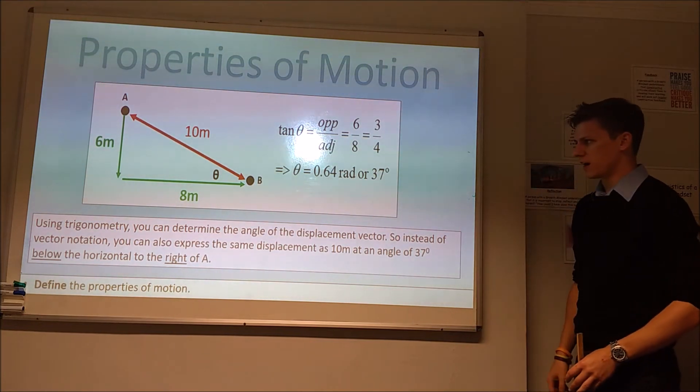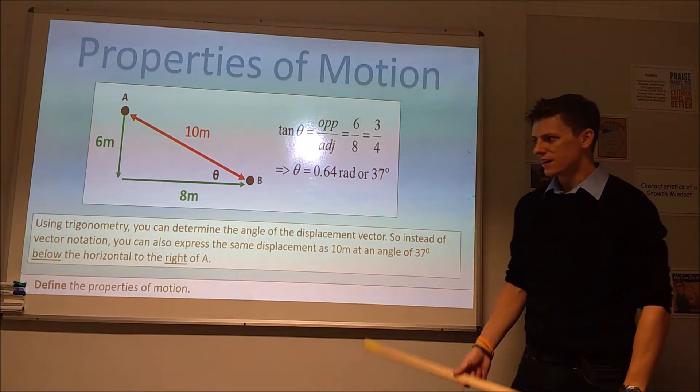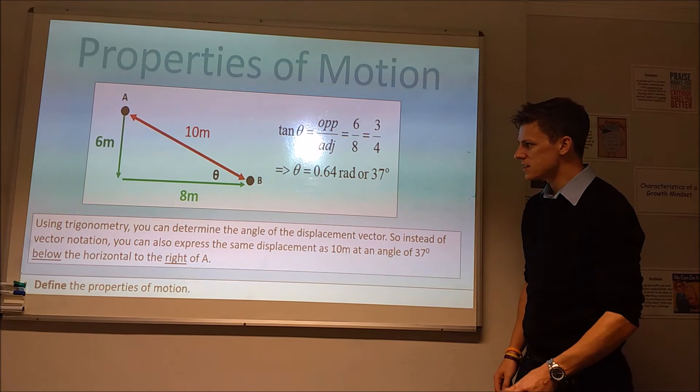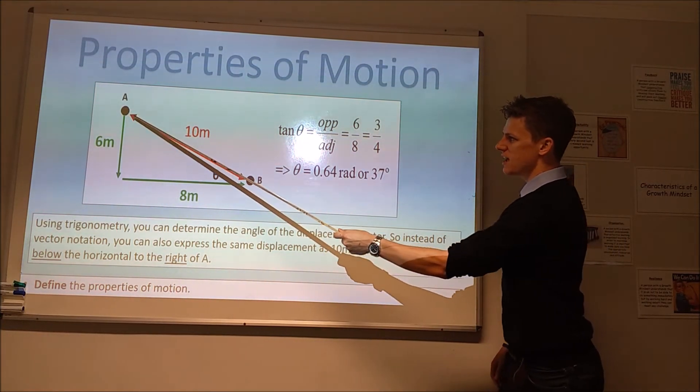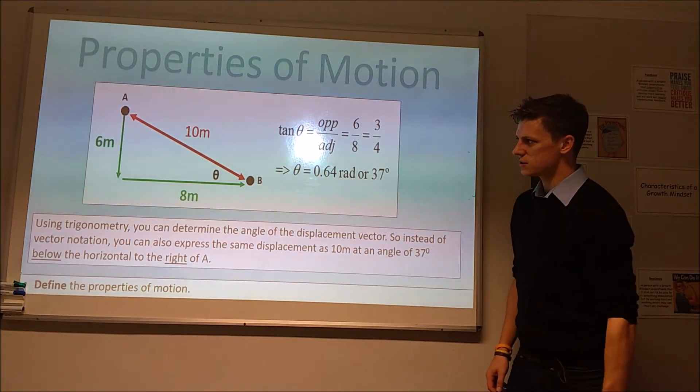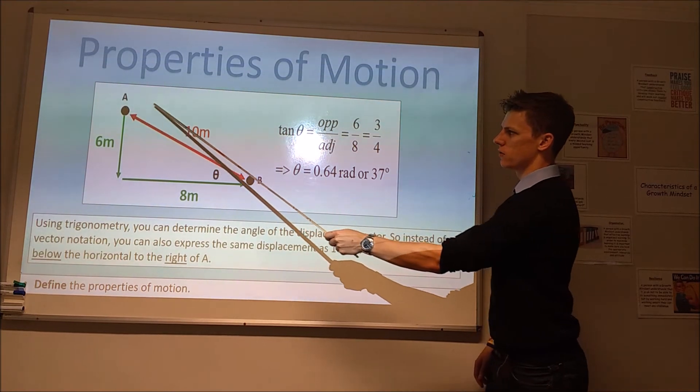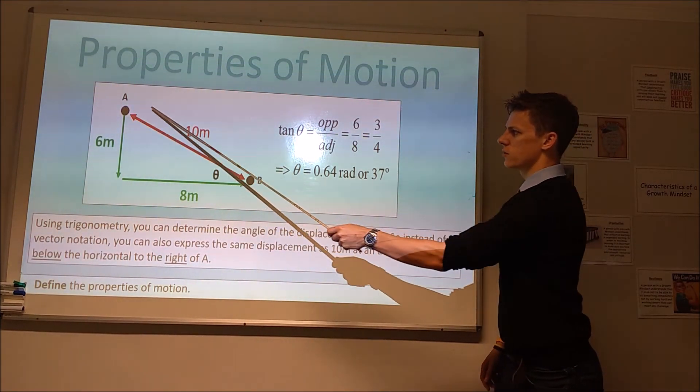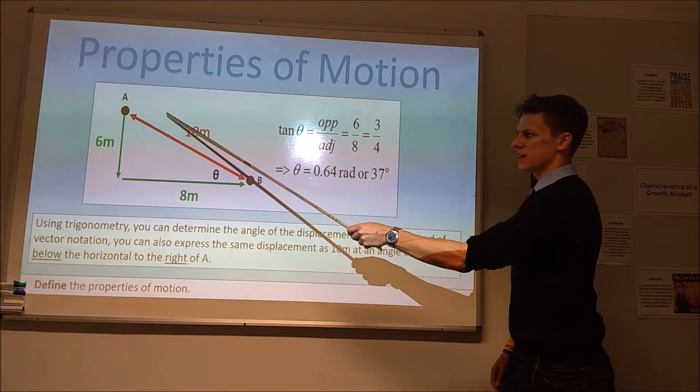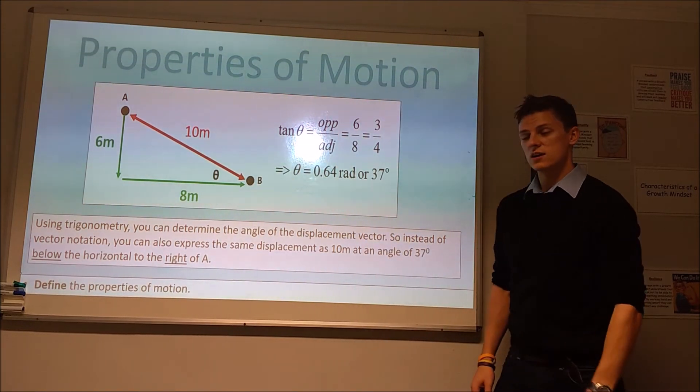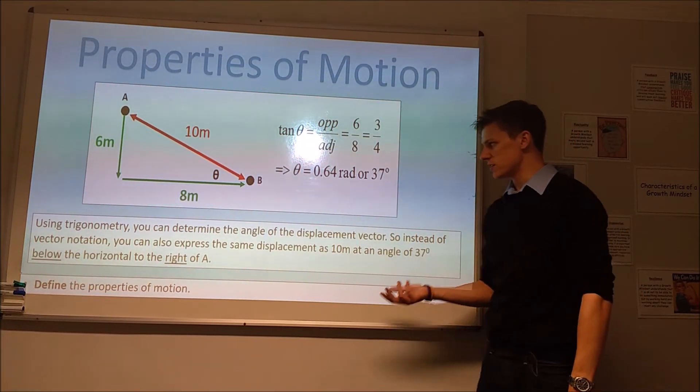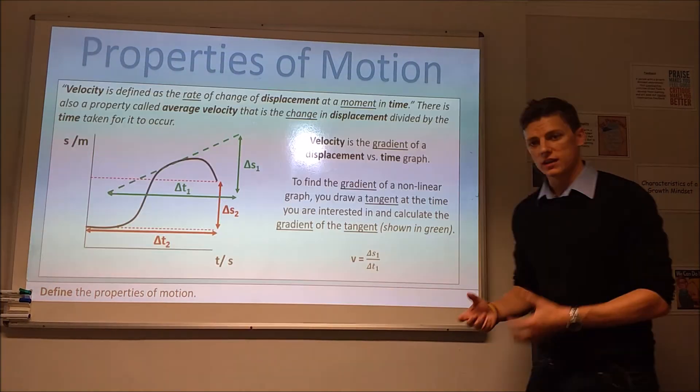Now we've got this angle, we can see that we're going to need to go essentially ten meters at 37 degrees below the horizontal or the x direction here. If we drew another line in across here, this angle here would be 37 degrees. So it's ten meters at 37 degrees below the horizontal there.